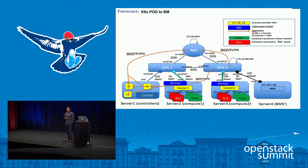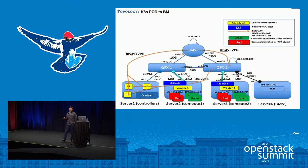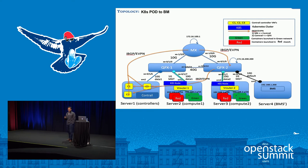This is essentially talking about how a bare metal server gets connected to the whole overlay model through an EVPN mechanism. As part of the demo, we can see that there are L2 MAC address-based routes which are pushed to the QFX — the top-of-the-rack switch — and we have a VXLAN endpoint from our V-router going into the QFX.